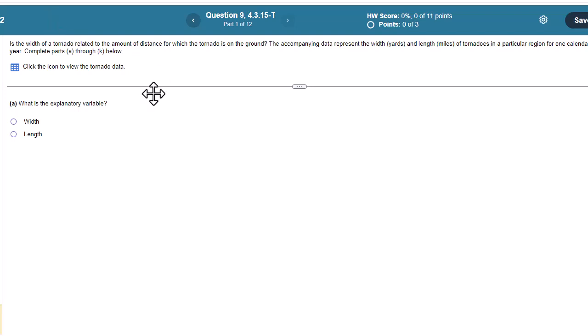Is the width of a tornado related to the amount of distance for which the tornado is on the ground? The accompanying data represent the width in yards and length in miles of tornadoes in a particular region for one calendar year, complete parts A through K. Just hang in there for this one. We're going to do it one step at a time.